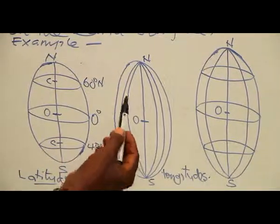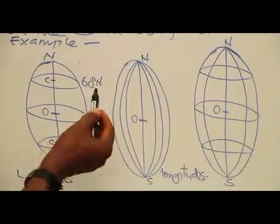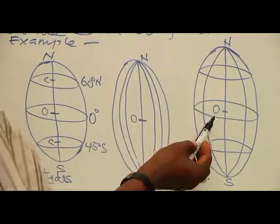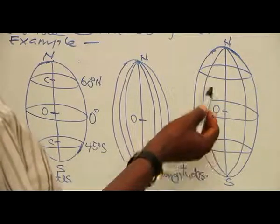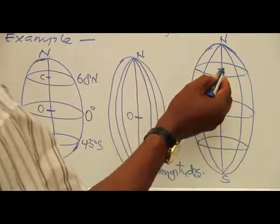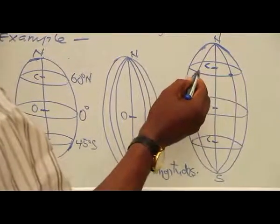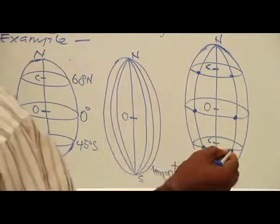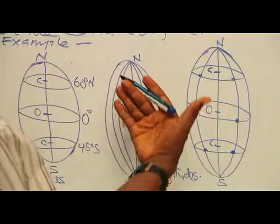This diagram describes latitudes. Latitude 0 degrees is the equator. This one may be 60 degrees north, and this one may be 45 degrees south. Each of these has a center. Similarly, the second diagram describes longitudes, running east and west of the Greenwich Meridian. The third diagram represents a combination of latitudes and longitudes, and you observe that each has a center and there is a point of intersection.